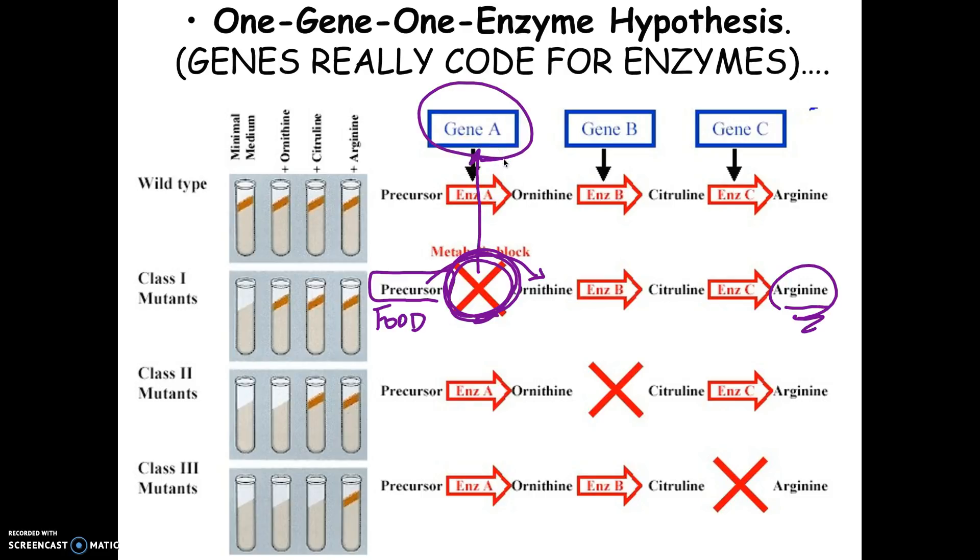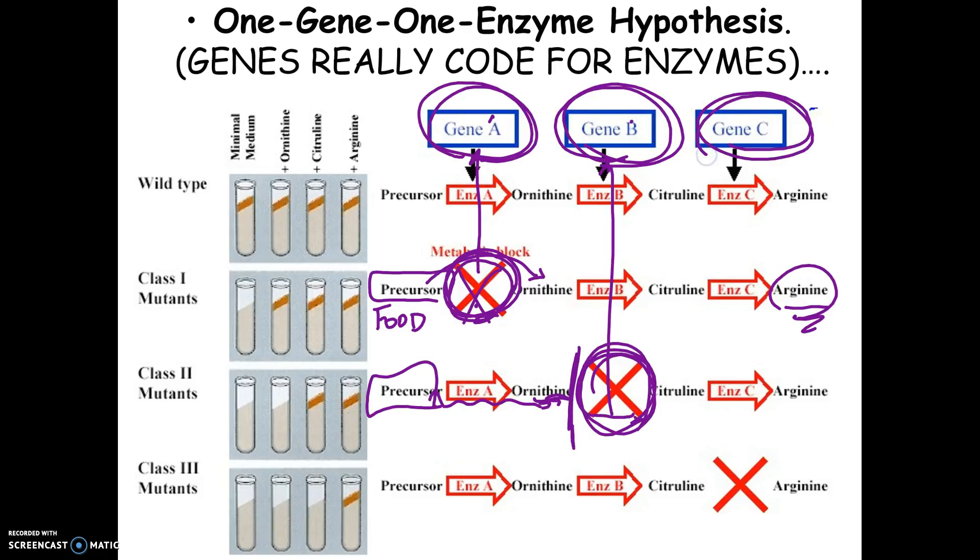What they discovered was if they took all the funguses that couldn't make this enzyme, they always had a mistake in the same area of their DNA. In other words, they were able to make a link that every time there's a mistake in a particular area of the DNA that they called gene A, the fungus could not make that enzyme. If instead you feed the fungus the precursor and enzyme A is working so they can make ornithine, but then enzyme 2 isn't working, they would get to this point and they wouldn't be able to break it down any further. And every time they found one that had a mistake in enzyme 2, it always had an error in the same area of the chromosome that they called gene B. So they came up with what they called the one gene, one enzyme hypothesis. They basically said that what a gene really is, is it's a code for making an enzyme. Every time the DNA gets messed up here, it's always enzyme A. Every time the DNA is messed up here, it's always enzyme B. And every time the DNA is messed up in this area, it was always enzyme C.